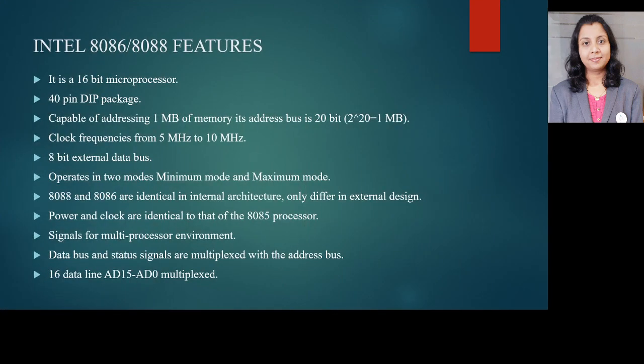Next we will look at Intel 8086/8088 features. The first feature is it is a 16-bit microprocessor — the 8085 microprocessor was an 8-bit microprocessor. Next feature is a 40-pin DIP package. It is capable of addressing 1 megabyte of memory. Its address bus is 20-bit, that is 2 raised to 20 equals 1 megabyte. Clock frequency is from 5 megahertz to 10 megahertz, and an 8-bit external data bus is present.